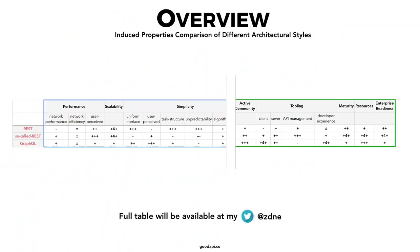I tried to put this into a big comparison table with a lot of columns, but it didn't fit here. I'm going to share it — I'd love to hear your comments and thoughts. It's a scoring table on different properties comparing these styles. I'm going to post it later on my Twitter.